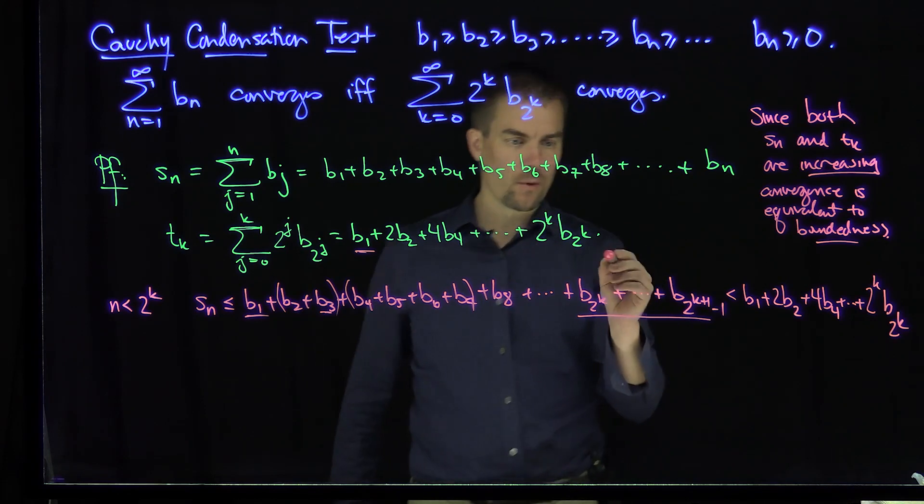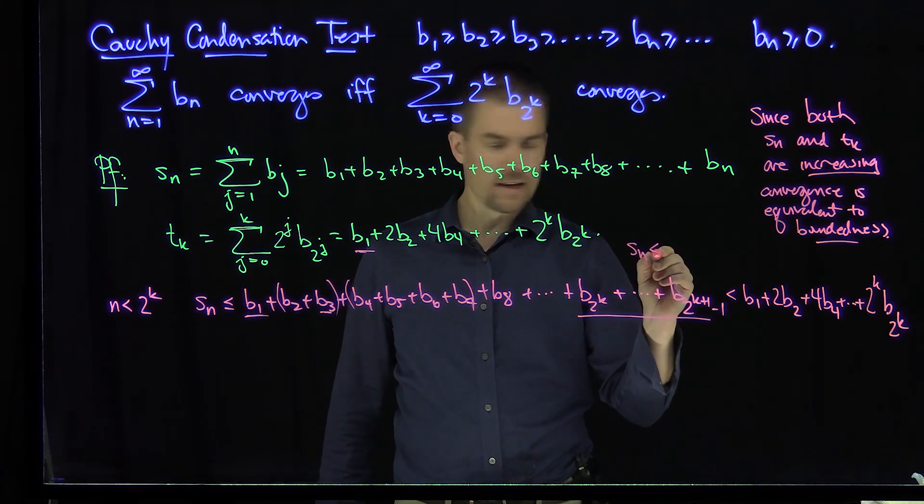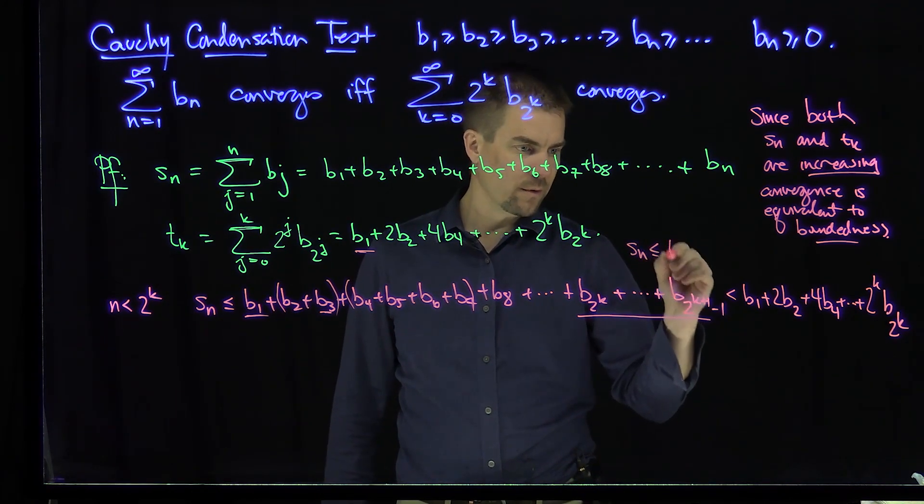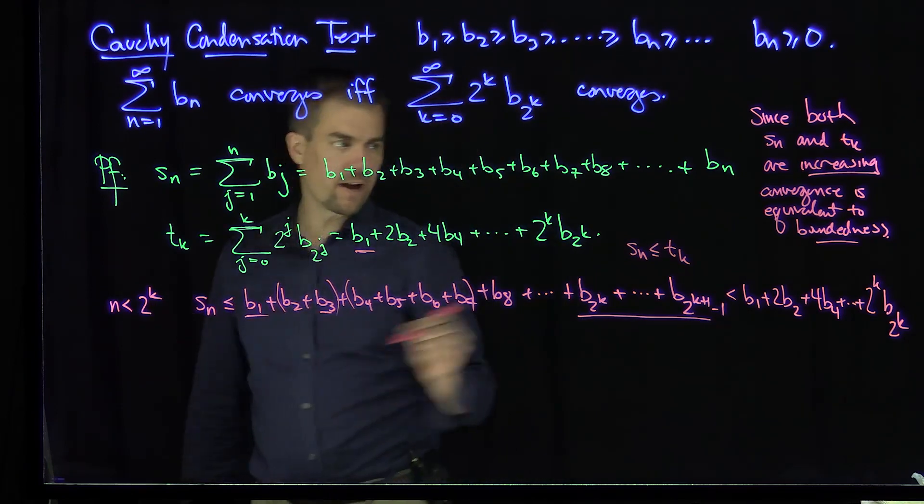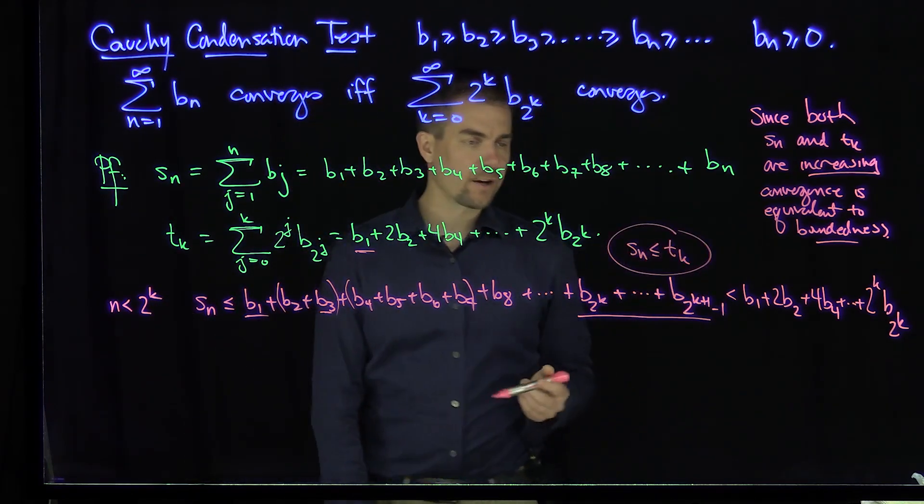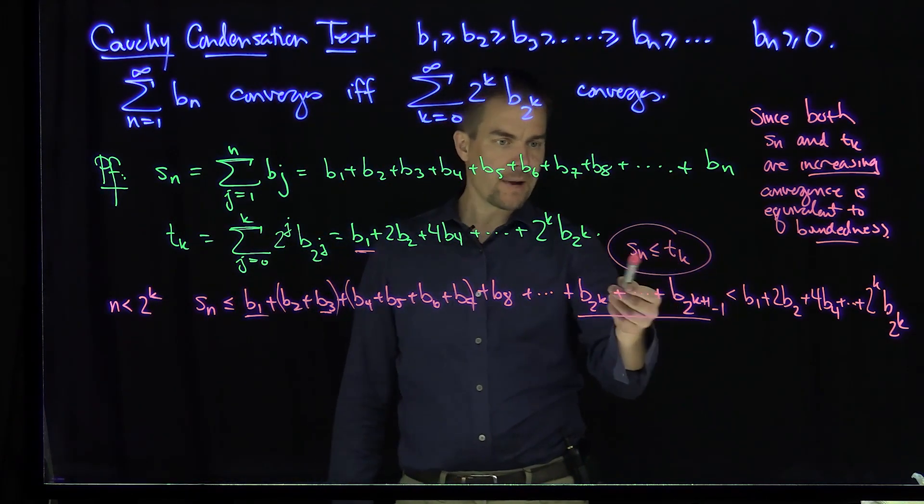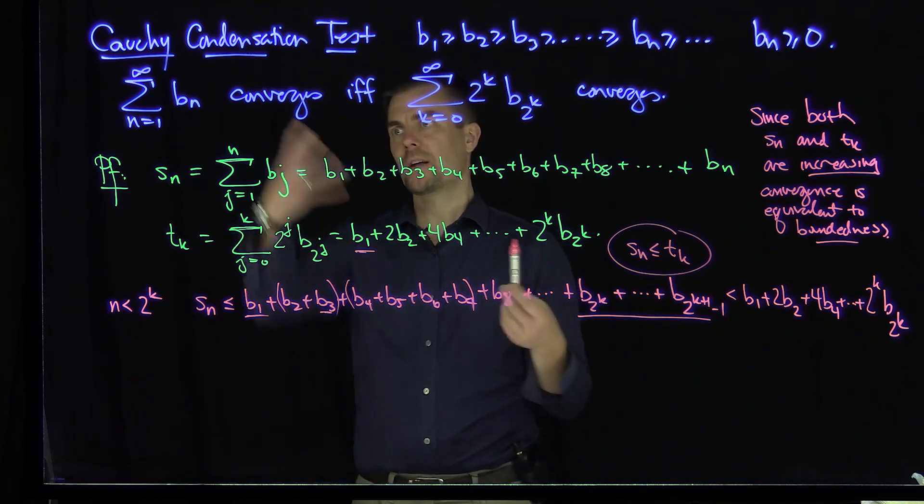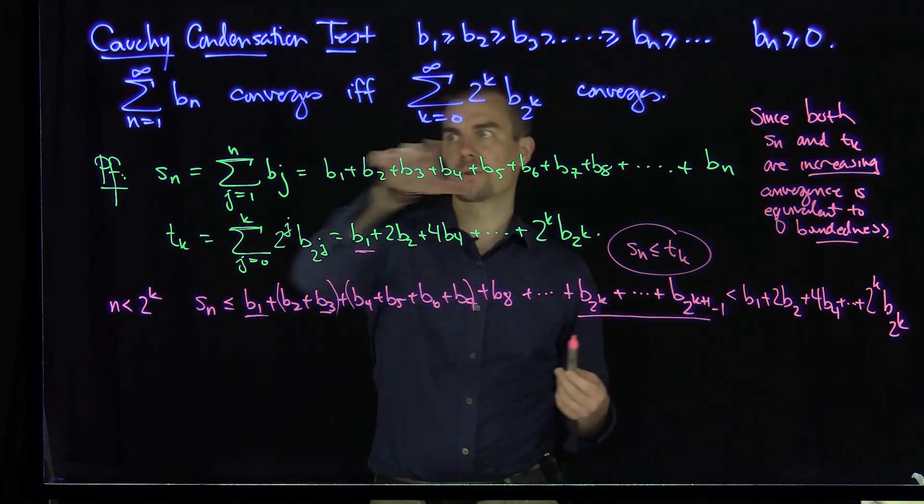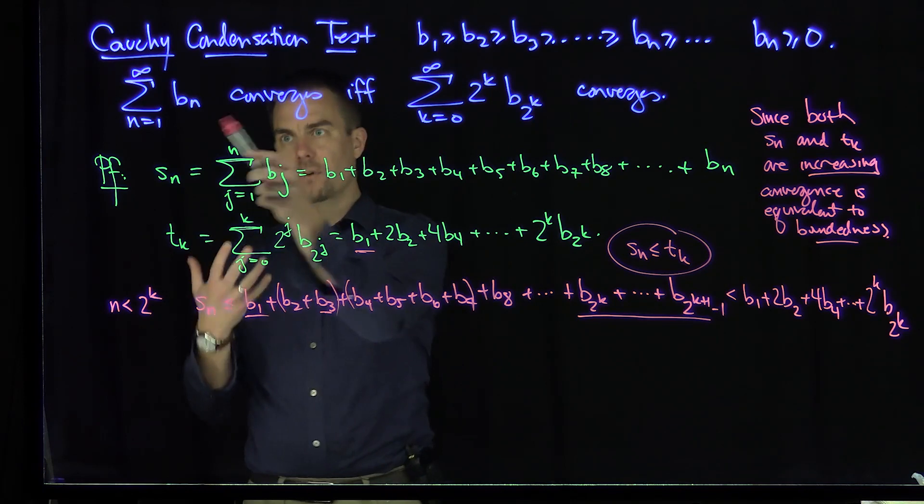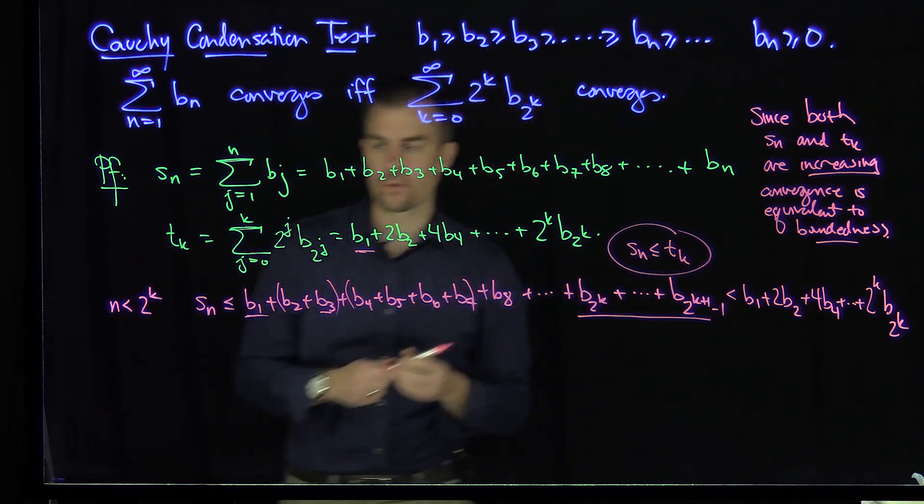And we see exactly that Sn is bounded. So this tells us Sn is less than or equal to Tk in this regime of n. In other words, what we can say here is that if the Tk is bounded, then the Sn is bounded. And therefore, if our dyadic series converges, then our original series will converge. So that's one direction.